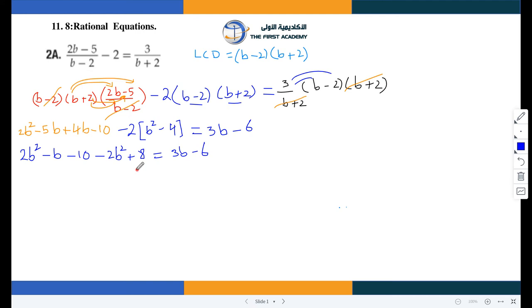Now if we have like terms add them, or if you have the same number with opposite sign cancel it. Negative B, negative 10 and plus 8, so negative B minus 10 plus 8 is negative 2. Equals 3B negative 6.